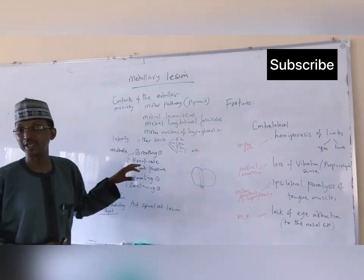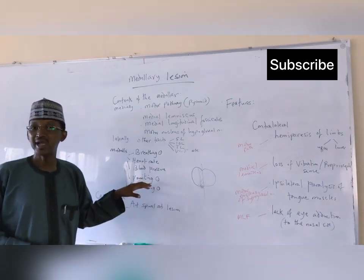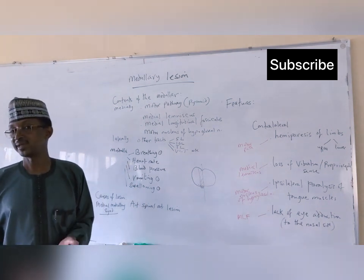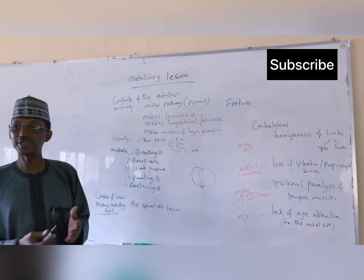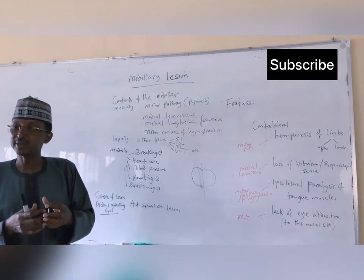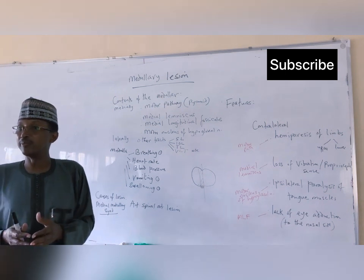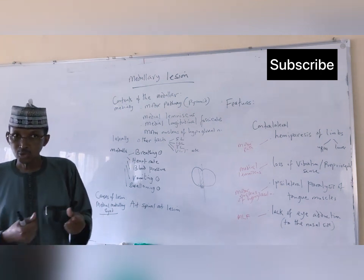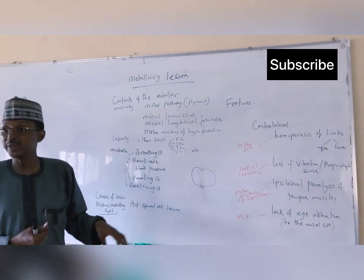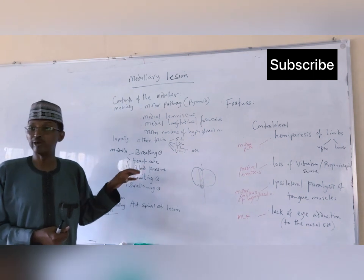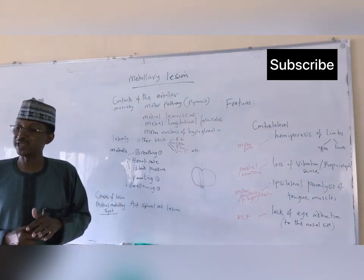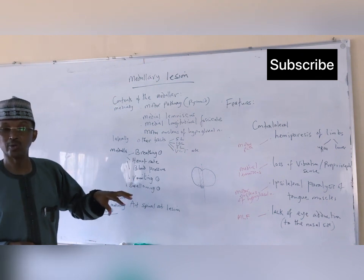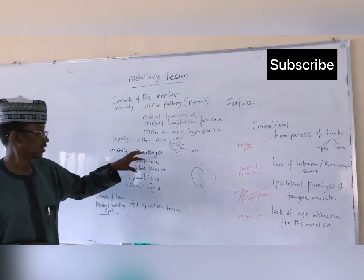In the medulla oblongata we have certain important centers, which are the nuclei of certain cranial nerves. The tenth cranial nerve, the vagus nerve, has about three important nuclei whose axons combine together to form the vagus nerve. Similarly, the ninth cranial nerve, the glossopharyngeal nerve, also originates from nuclei located within the medulla oblongata.